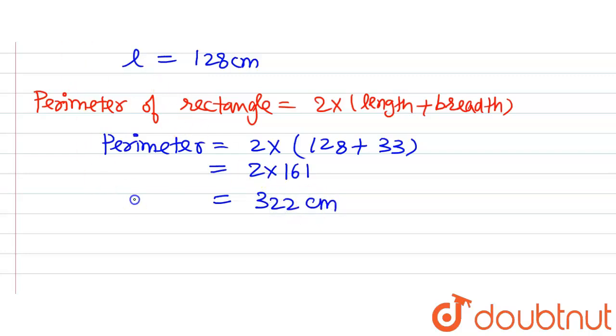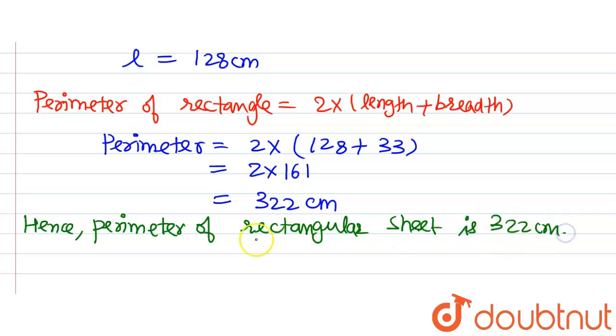So this is what we were asked in the question: to find out the perimeter of the rectangular sheet. Hence, perimeter of rectangular sheet is 322 cm. Thank you.